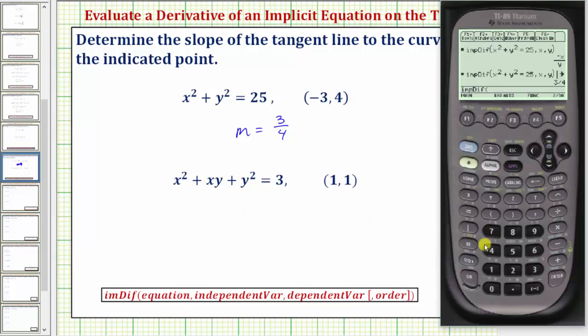Next we'll enter the equation. So x raised to the power of two, and when we enter xy we need to enter x times y. So plus x times y plus y raised to the power of two equals three, comma the independent variable is x, comma the dependent variable is y. Close parenthesis.